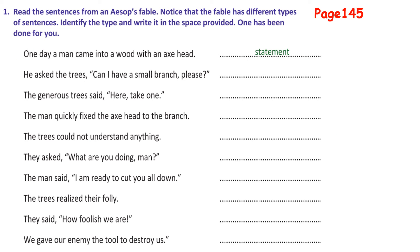Now turn to page 145. There is an exercise: read sentences from an Aesop's fable, identify the type of each sentence, and write it in the space provided — one has been done for you. Get your pencil ready. The first one is already done: 'One day a man came into a wood with an axe head' — this is just a statement, which is declarative.